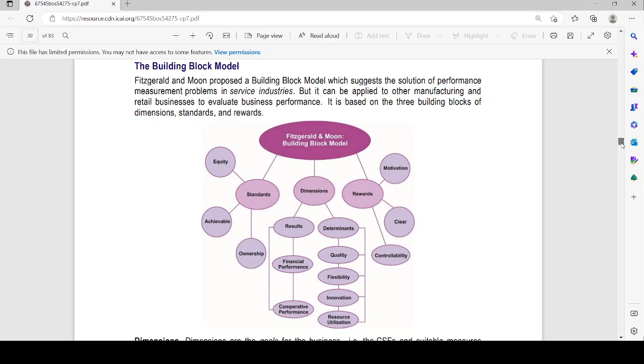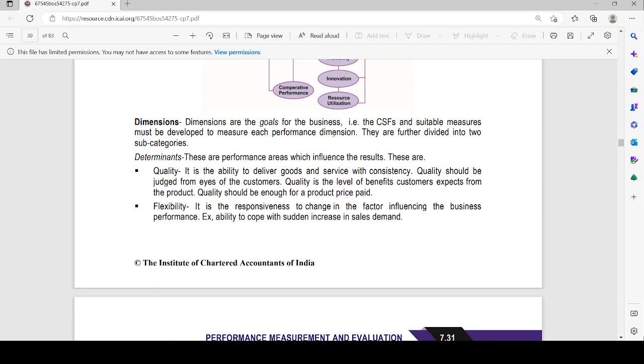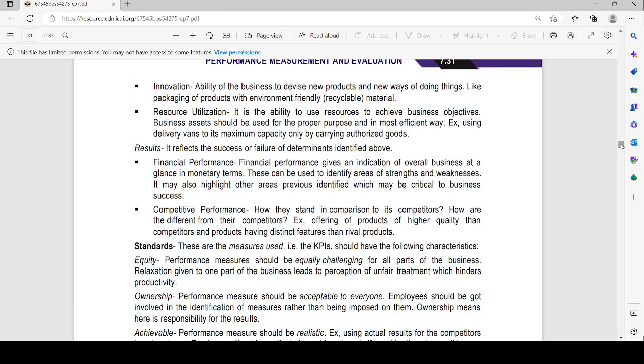Let's go over it once again. Dimensions are the goals for the business and its critical success factors. Suitable measures must be developed to measure each performance dimension. These are further divided into two components. These are performance areas which influence the results. These are quality, flexibility. Quality is the ability to deliver the goods and service with consistency. Flexibility is the responsiveness to the change and factor influencing the business performance. Innovation.